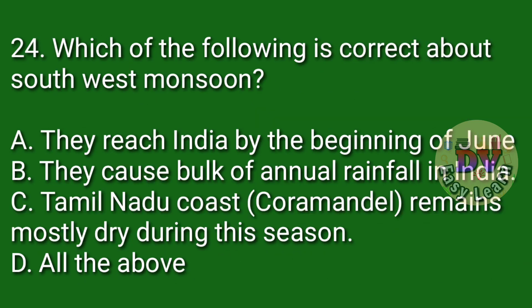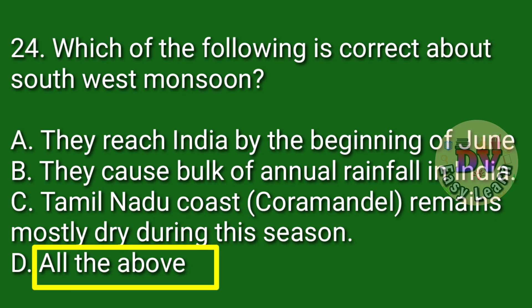Question number 24. Which of the following is correct about the south west monsoon? Correct answer: All the above — they reach India by the beginning of June, they cause the bulk of annual rainfall in India, and the Tamil Nadu coast (Coromandel coast) remains mostly dry during the season.